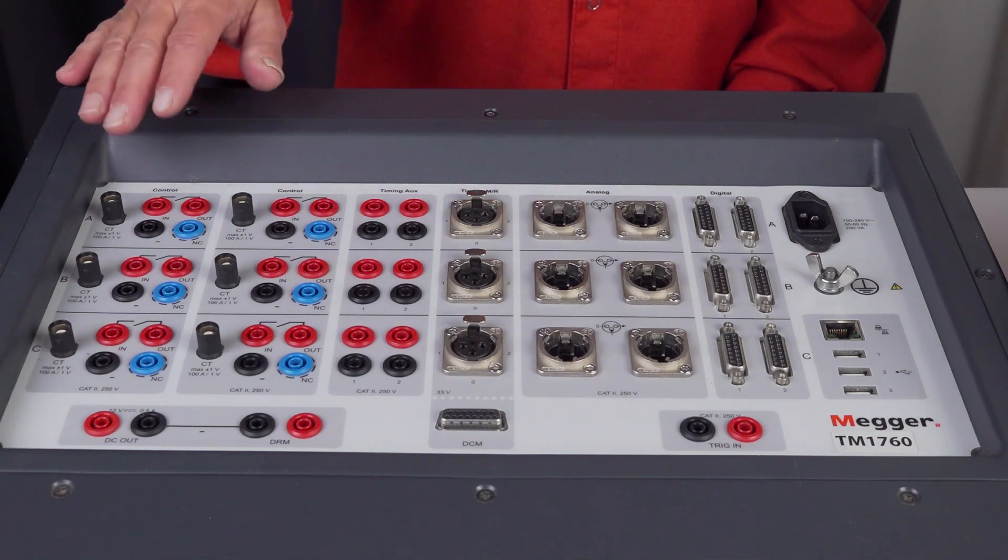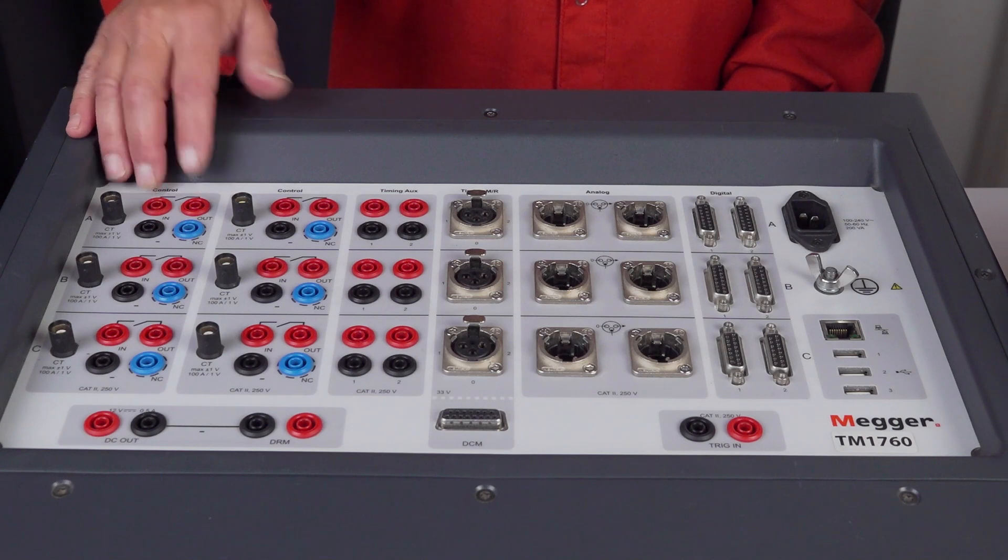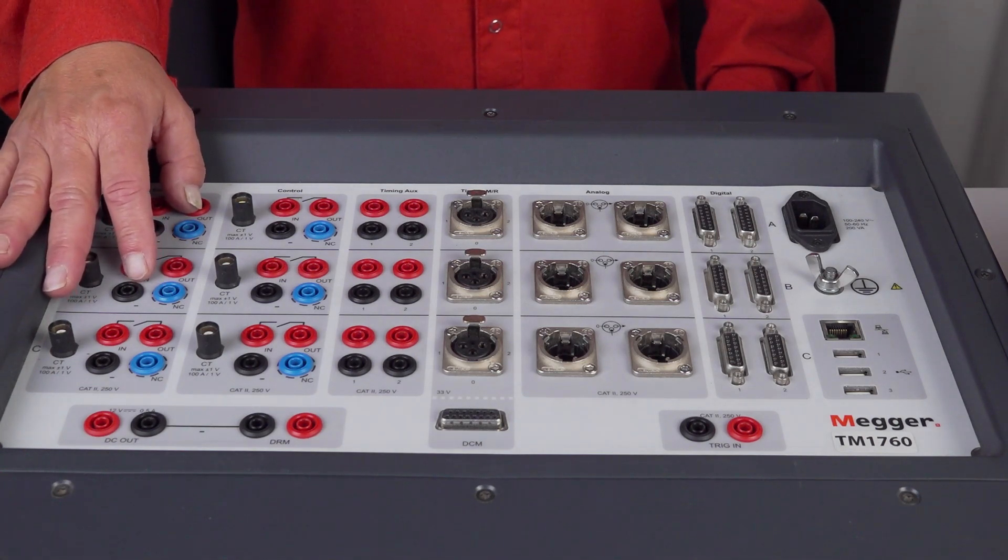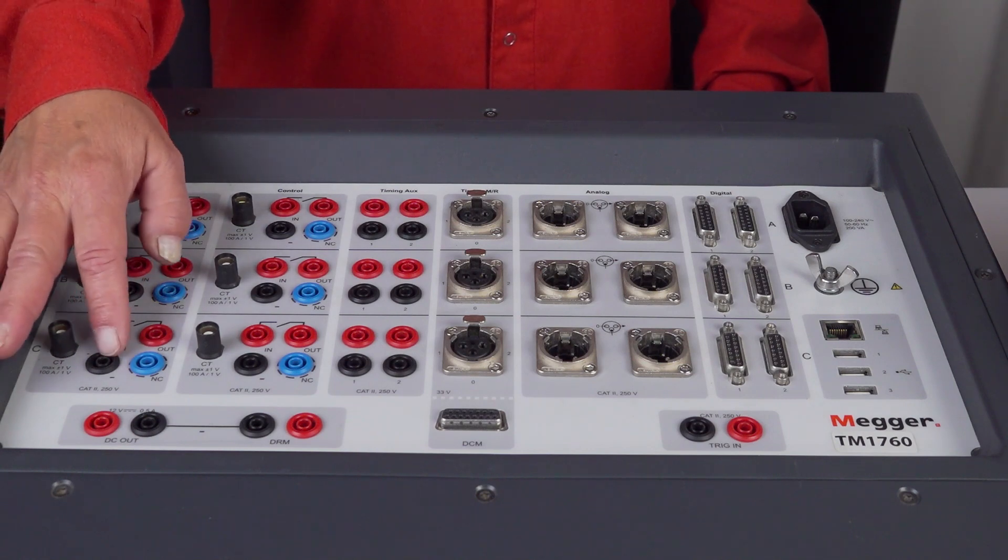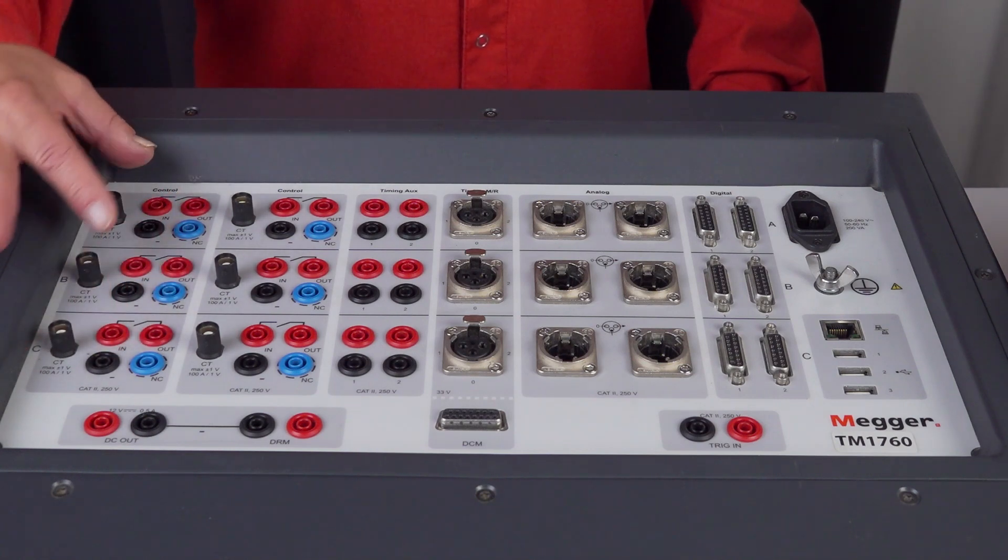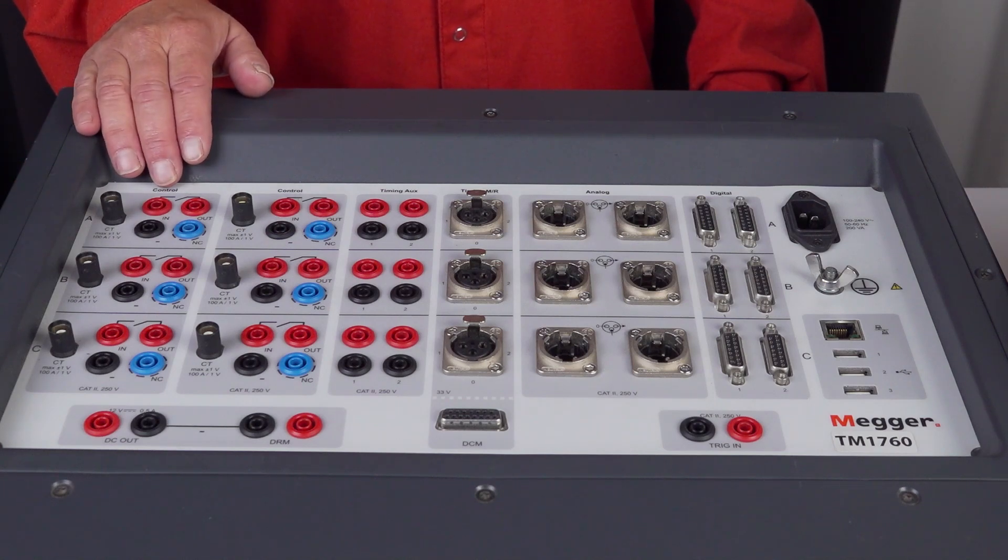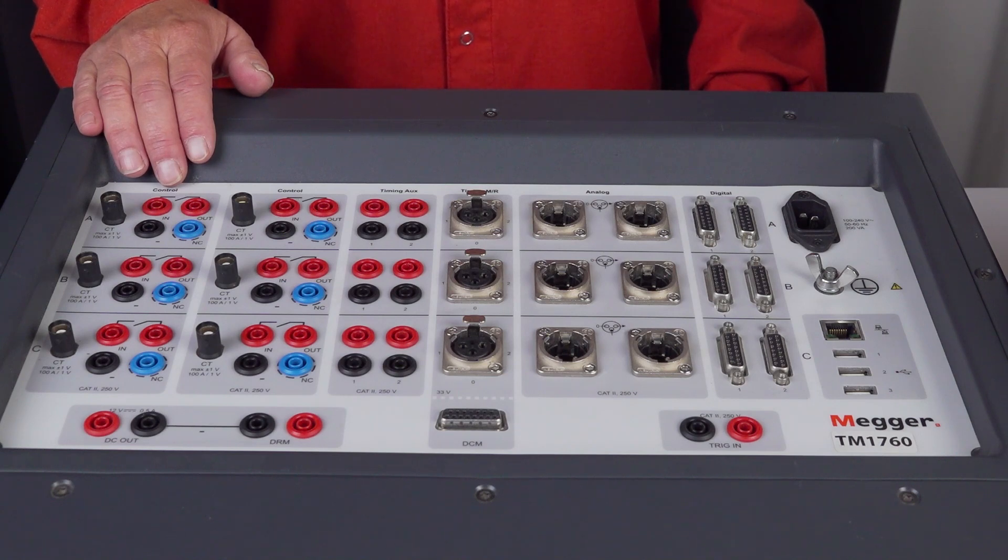So we're going to use the control channel which sends out control close and control open and if you have an open 2 you can also use a third channel for open 2. We are going to use these two. It's measuring coil current at the same time and also automatically the auxiliary contacts in the circuit.